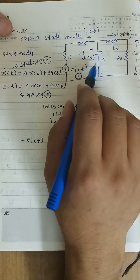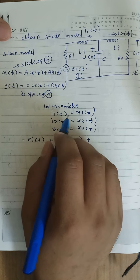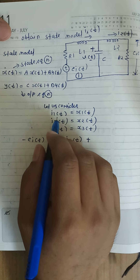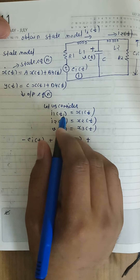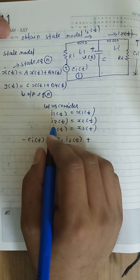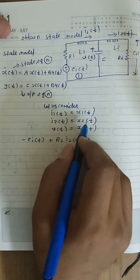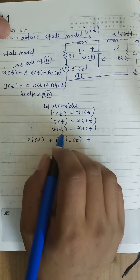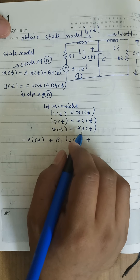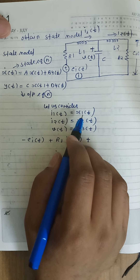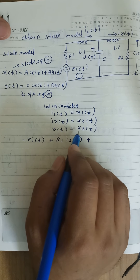We will consider I1(t) as the first state variable: I1(t) = x1(t). Similarly, I2(t) is the second state variable: I2(t) = x2(t). And V(t) is the third state variable: V(t) = x3(t). So here we have three state variables.